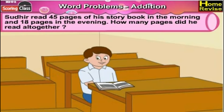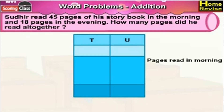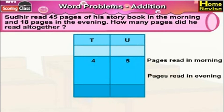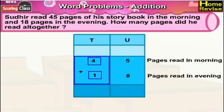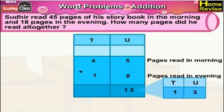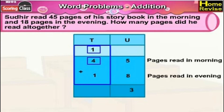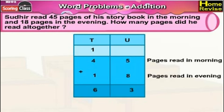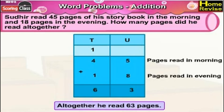Sudhir read 45 pages of his storybook in the morning and 18 pages in the evening. How many pages did he read altogether? Let us arrange them in order. Under units we have 5 units plus 8 units, and under tens it is 4 tens plus 1 ten. 5 units plus 8 units is 13 units — write 3 in the units column and carry forward 1 in the tens column. 1 ten plus 4 tens plus 1 ten is 6 tens. So it is 6 tens plus 3 units, which means 45 plus 18 is 63 pages. Altogether he read 63 pages.